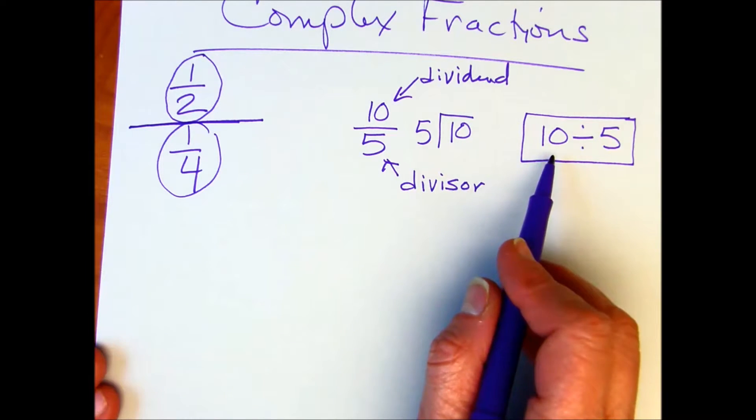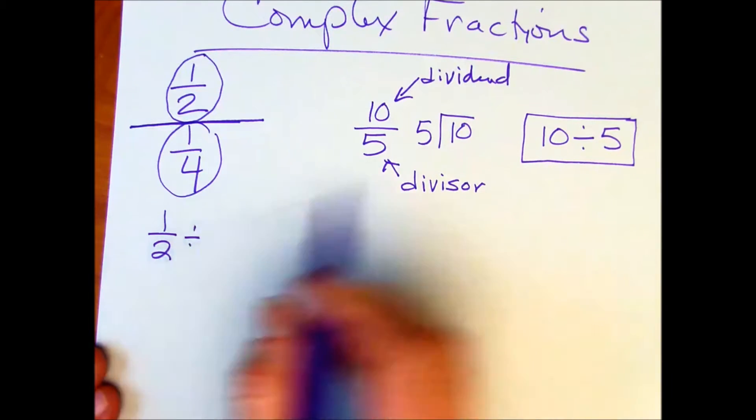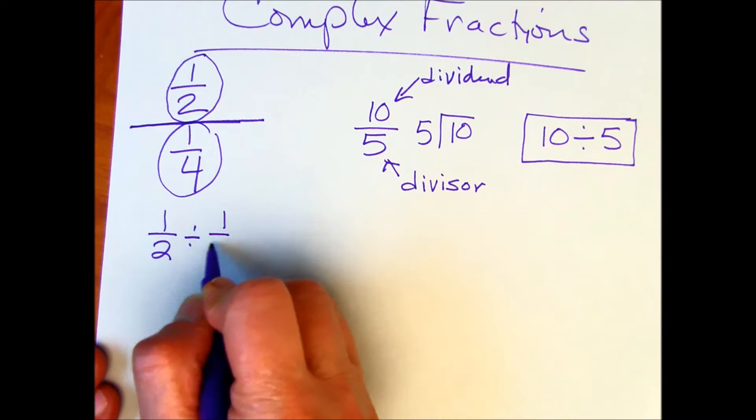And so let's go ahead and rewrite this so that we can then do the division problem. The first number, like in this ten, we're going to write the numerator first, so that's one-half divided by the denominator or the divisor, which is going to be one-fourth in this case.